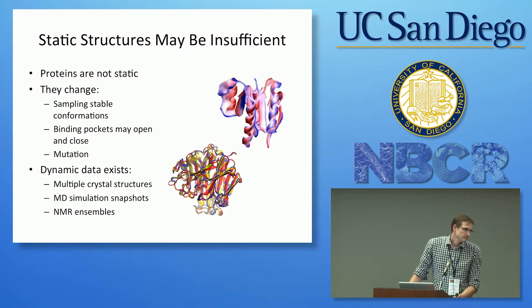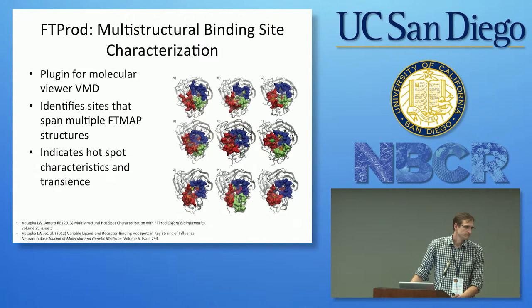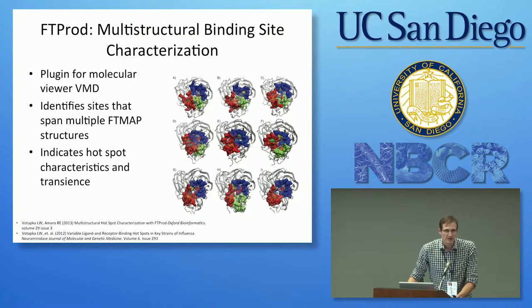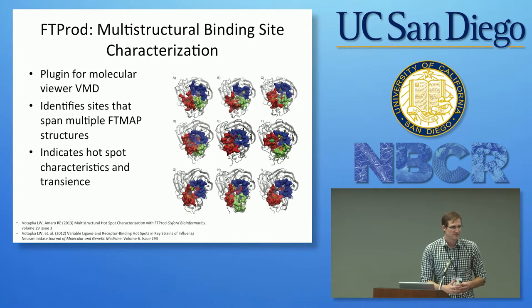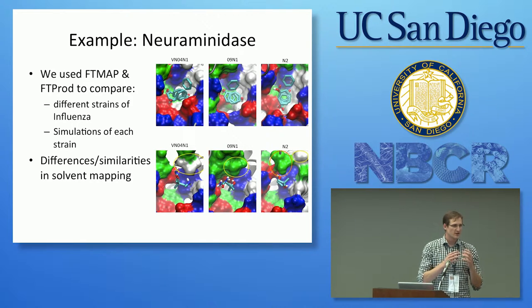Regarding structures from different species with subtle mutations in a binding pocket — if you map one structure and then another with some mutations, FTProd would combine them. The question is how to see subtle differences. There's a sensitivity slider: if you slide it all the way to the right, everything gets put into the same site; slide it left and everything is separated out.